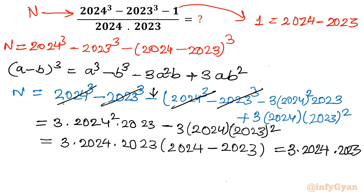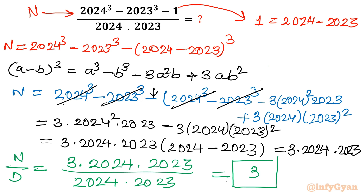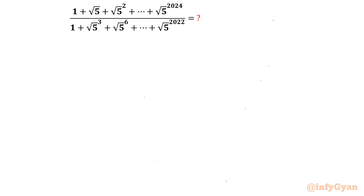Now let us find the n/d value. So n/d = (3 × 2024 × 2023) / (2024 × 2023). So our first answer is 3. The answer for the first question is 3.